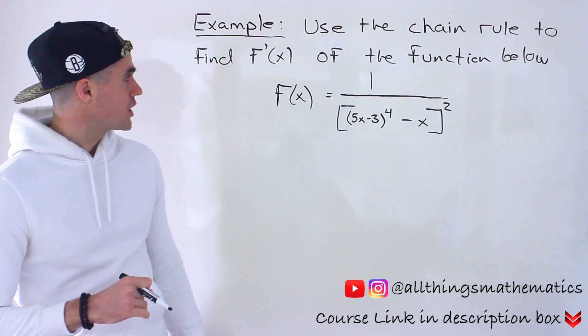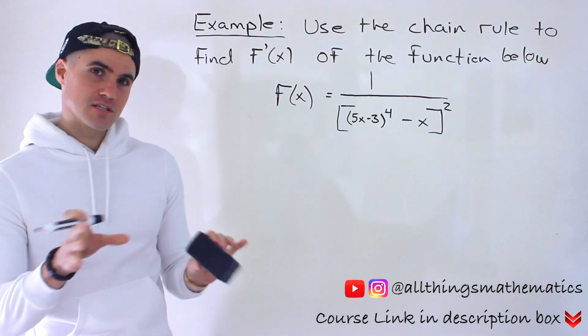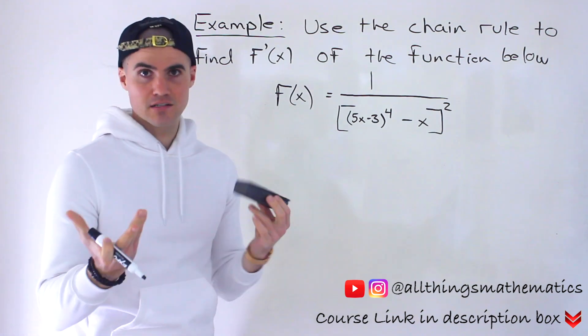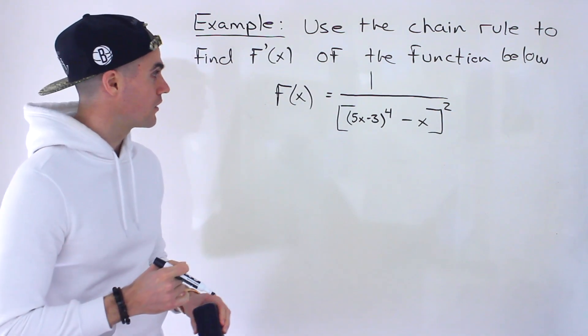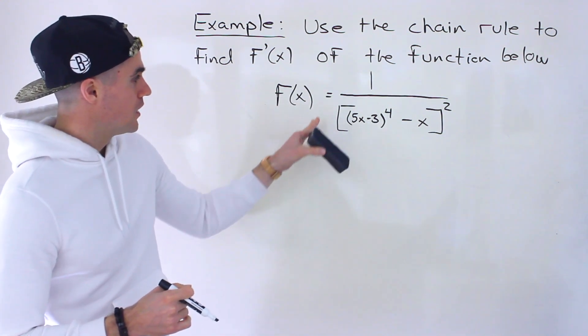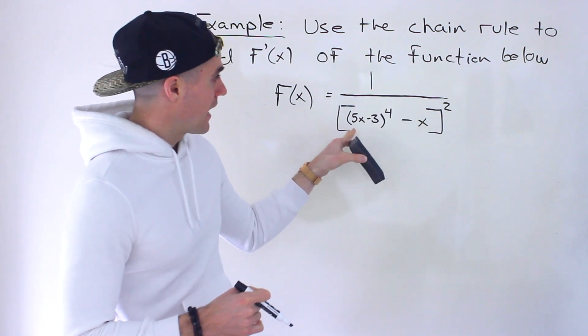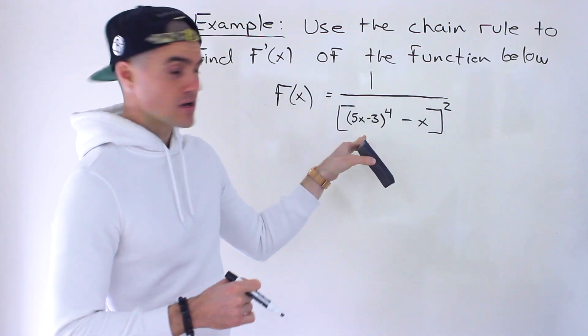Still dealing with the chain rule. We've got to use the chain rule to find the derivative of this function here. Notice this is a weird looking function. As lots of functions in chain rule are, they're going to be different composite functions. So we have one over a large square bracket, and then within that we have two functions, a difference of functions.